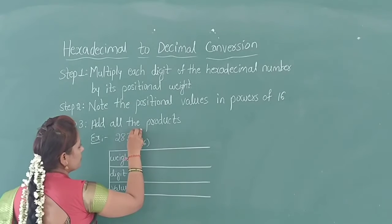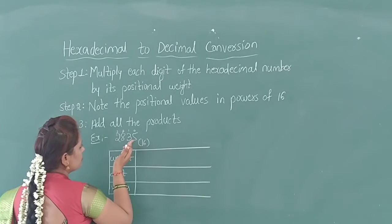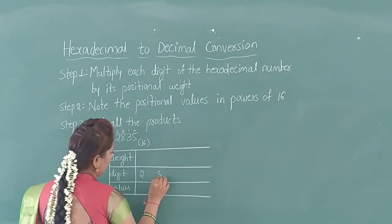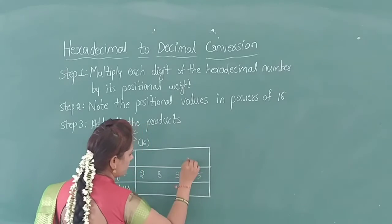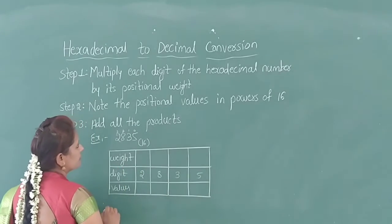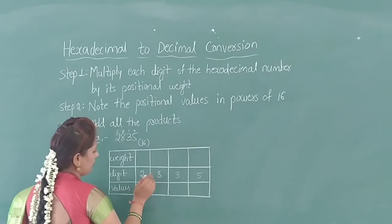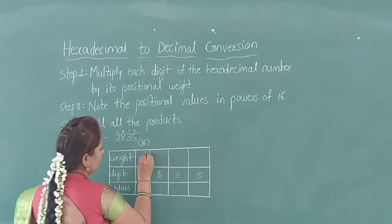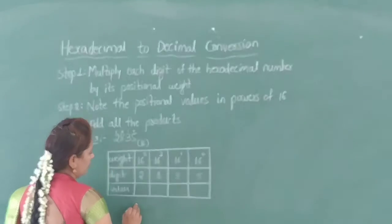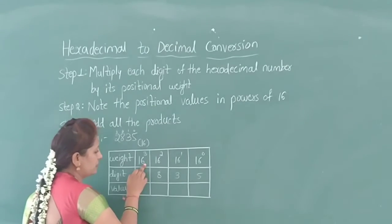First, draw a table. The position values are 0, 1, 2, 3. We have no decimal point values, so it is counted from 0 to 3. Write out the hexadecimal digits: 2, 8, 3, 5. Write out the positional weight values in powers of 16: 16 to the power of 3, 16 to the power of 2, 16 to the power of 1, 16 to the power of 0. Note the positional weight values in powers of 16.